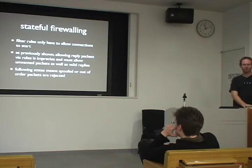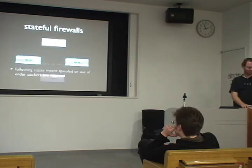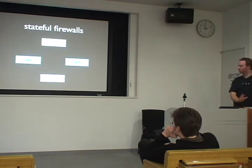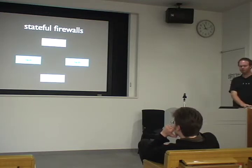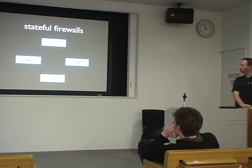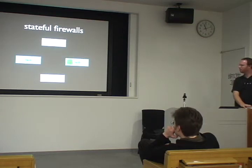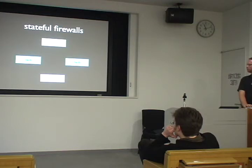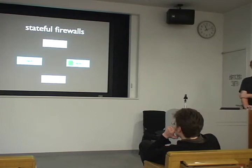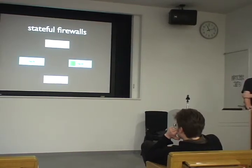I have a diagram which shows how stateful firewalls work: the client builds a packet and sends it through the firewall. The firewall creates a state for it and forwards it to the server. The server then builds its reply with similar characteristics and sends it through the firewall. Because it's the same shape, it's allowed to forward it back through to the client.